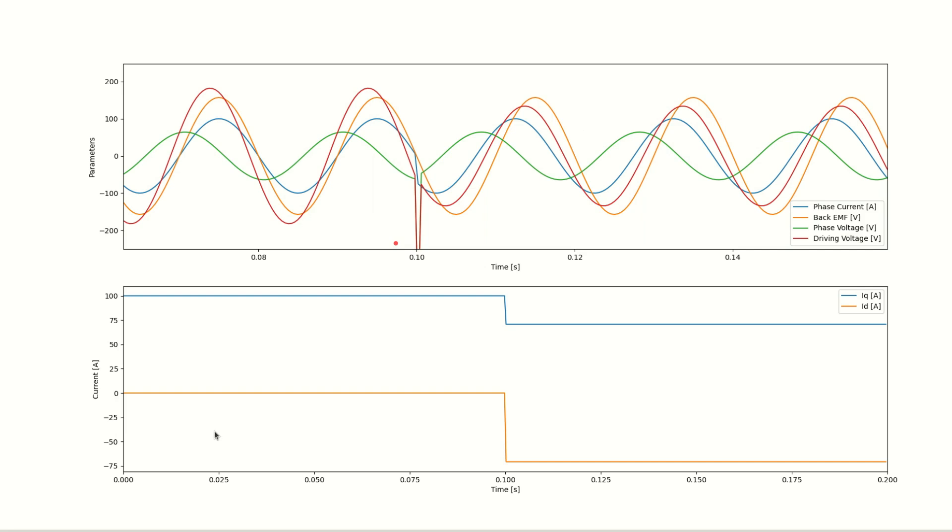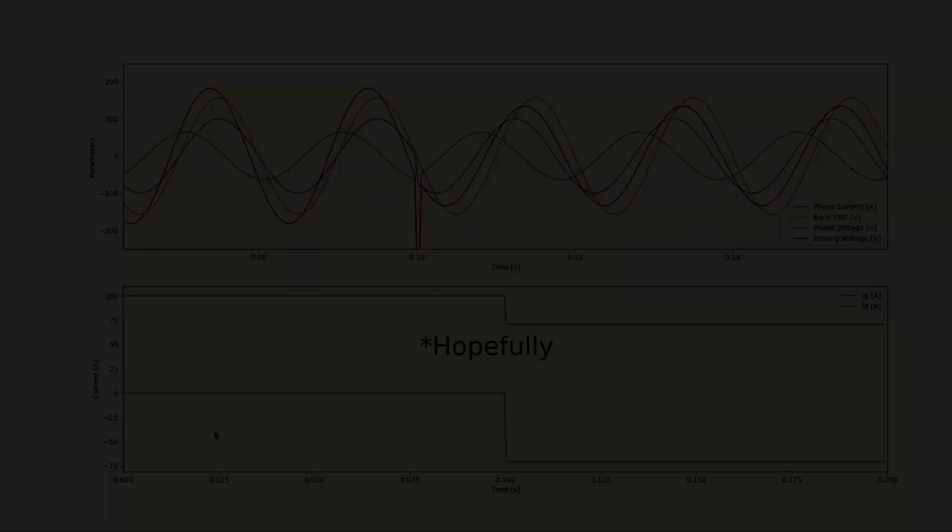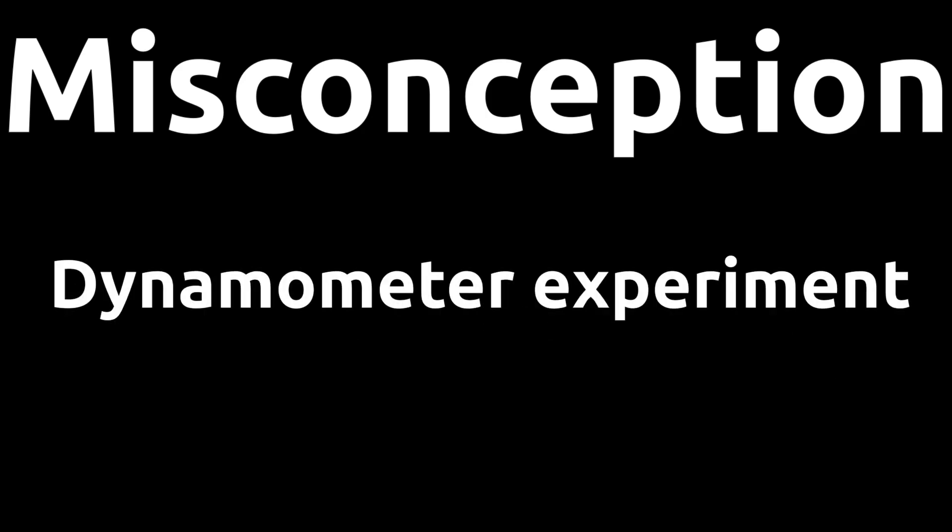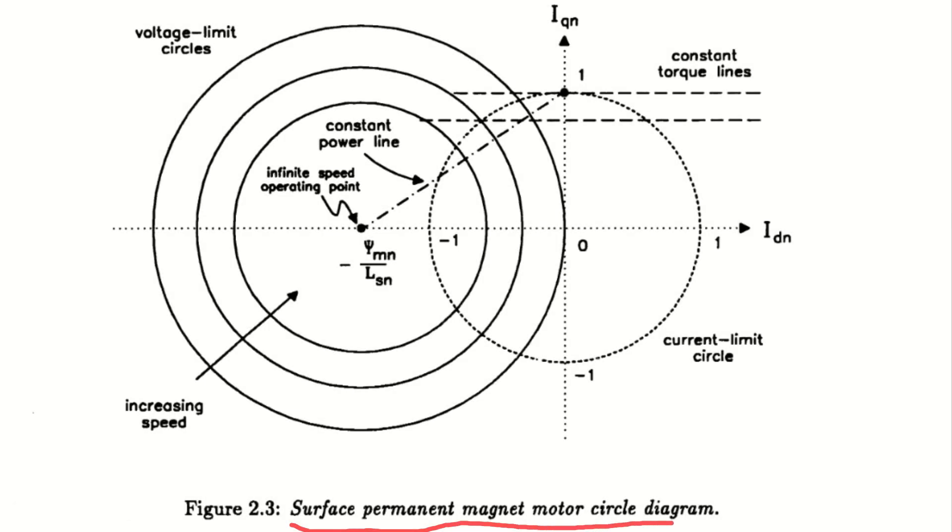Okay, so now that we understand how field weakening works, let's go back to the misconception we talked about. Does field weakening, which pretty much means increasing the current in the negative D axis, necessarily weaken the rotor's magnetic flux? I'm planning an experiment in an upcoming video which will debunk that misconception. But until I get to that, I think looking at the motor circle diagram of a surface mounted permanent magnet motor will also do the trick.